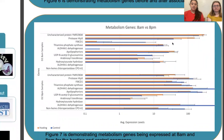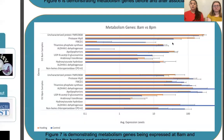Sea anemones also have another symbiont known as zooxanthellae. These zooxanthellae are photosynthetic organisms, so they must be active during the day to photosynthesize. One of our theories is that the clownfish may ultimately be giving its benefits to the zooxanthellae — if the zooxanthellae receives all these benefits, it performs more and gives the sea anemone more benefits in return. With all those products, the sea anemone once again has to digest them, so metabolism genes would be upregulated.